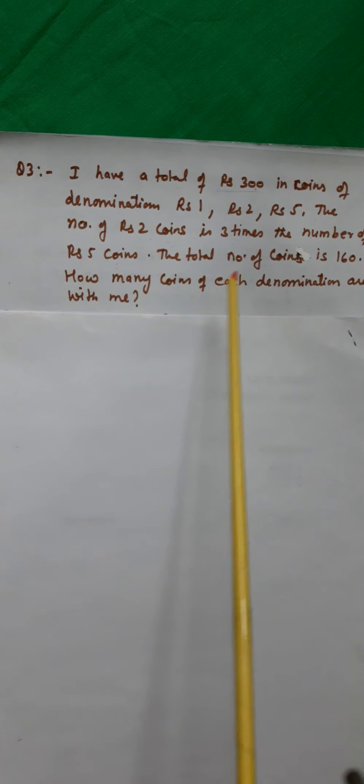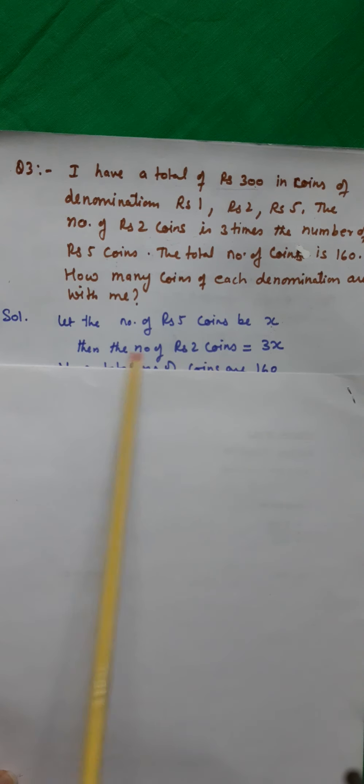Denominations means which type of currency you are having — 1 rupee, 2 rupee, 5 rupee, etc. So, according to the question, let the number of 5-rupee coins be x. Then the number of 2-rupee coins will be 3 times the number of 5-rupee coins, therefore that will be 3x.